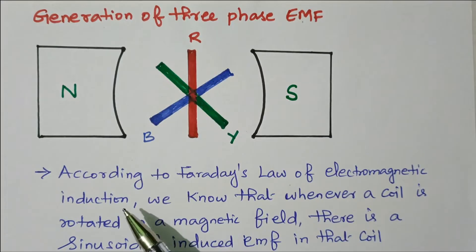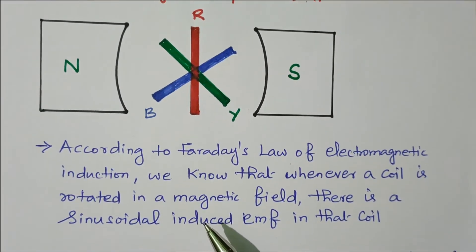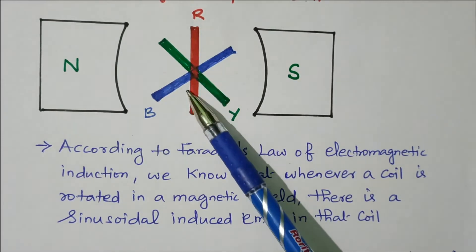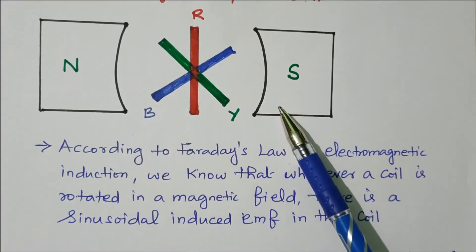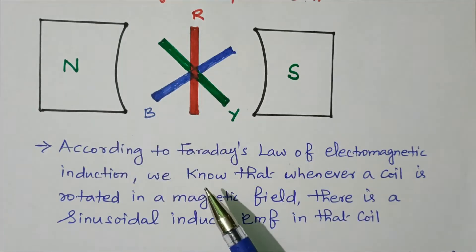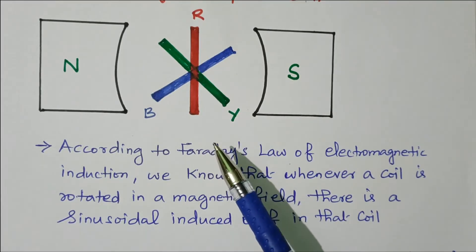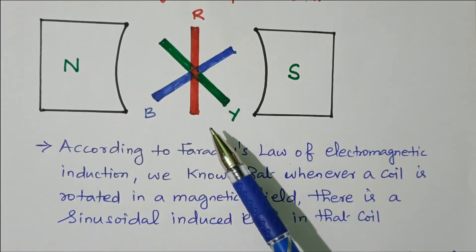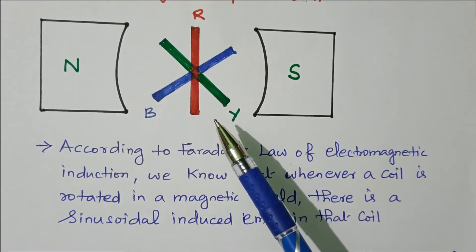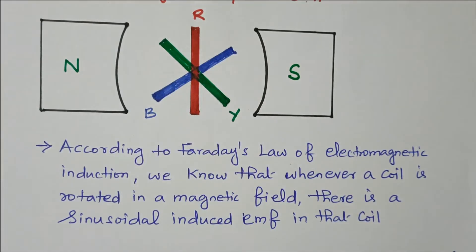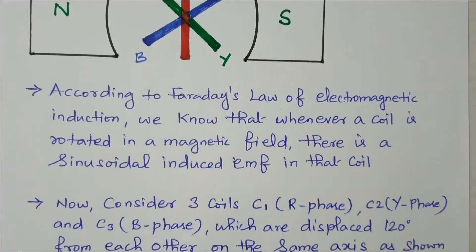Now we will see the working principle. According to Faraday's law of electromagnetic induction, whenever a coil rotates in a magnetic field, a sinusoidal induced EMF is generated in that coil. Since the coils are already displaced at 120 degrees, the induced EMF also has a 120-degree displacement between red, yellow, and blue.